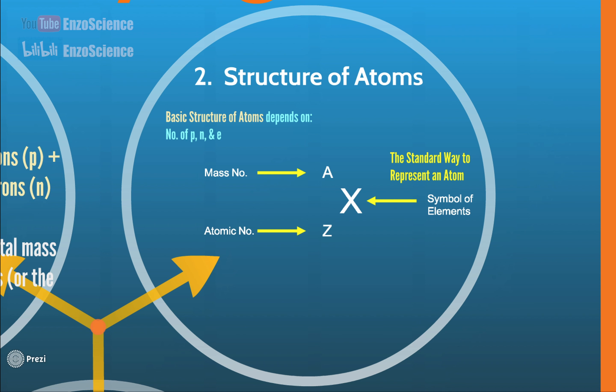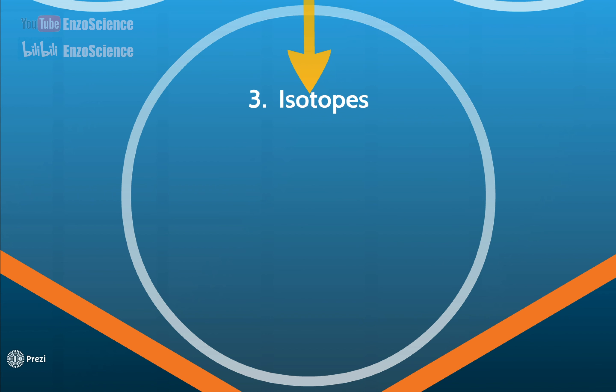You may ask me, where is number of neutrons? Let's look at this example. For aluminum, number of protons equals number of electrons, which is 13. Number of neutrons is indirectly represented by capital A minus capital Z, which is 27 minus 13, equal to 14, meaning there are 14 neutrons in this aluminum atom.